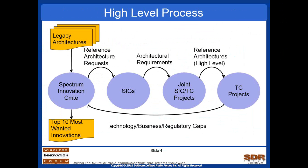The high-level process for development of the list involves the Spectrum Innovation Committee, which manages existing and proposed communication architectures and works with SIGs and technical committees to define projects that identify key business, regulatory, and technology gaps. From that, lists are generated to identify areas where resources are applied on projects, activities, and collaborative environments to address critical issues in the wireless community.